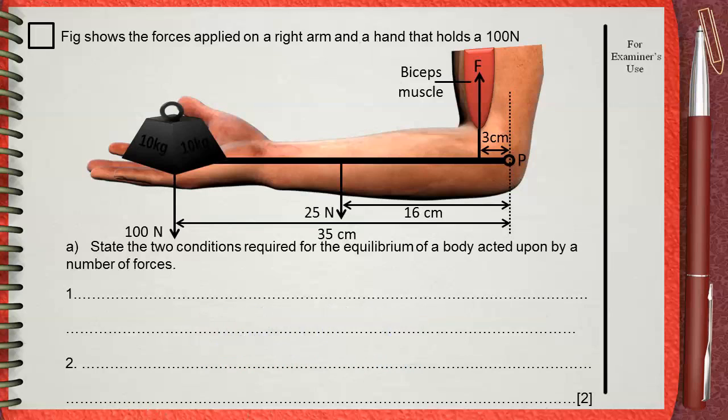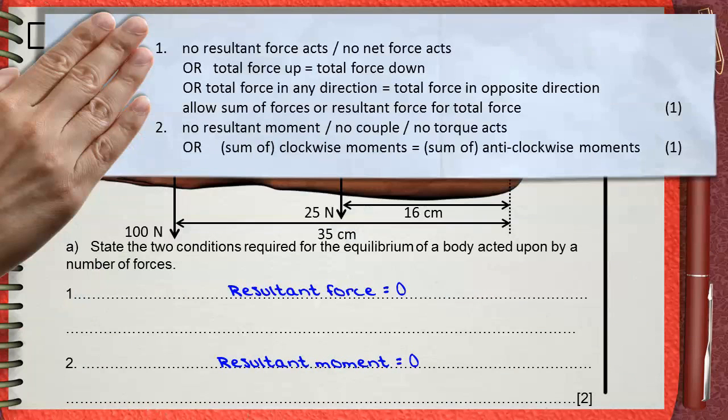A direct question that depends on how much you studied the lecture of moments. The two conditions of equilibrium are resultant force equals zero and resultant moment equals zero. The mark scheme also gives other options for the answer.